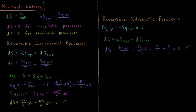Similarly, for adiabatic processes, the change in entropy of the universe is equal to zero, so it is indeed reversible. Both isothermal and adiabatic reversible processes are compliant with the second law of thermodynamics, which states that the entropy change of the universe is zero for reversible processes.